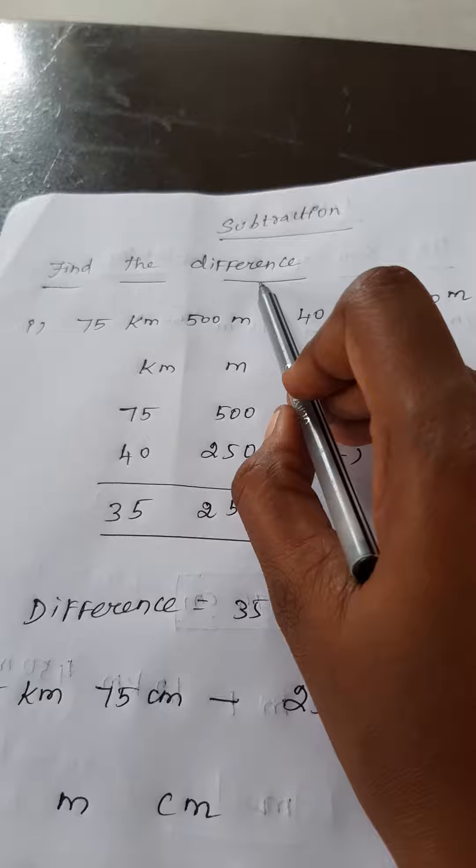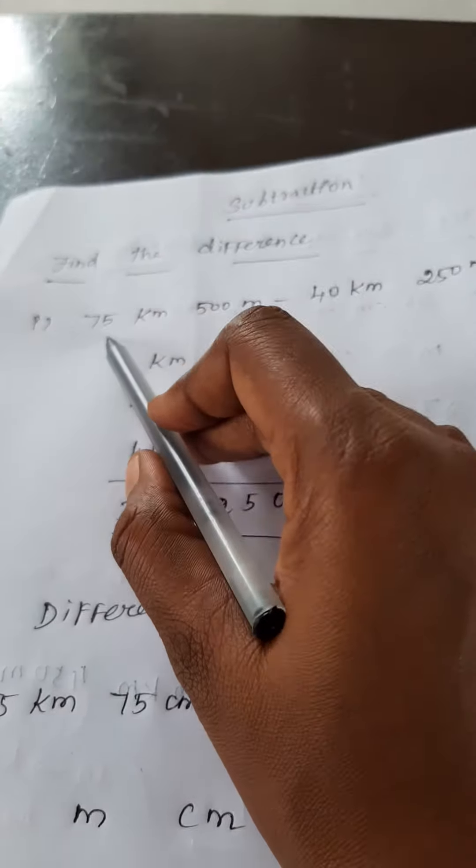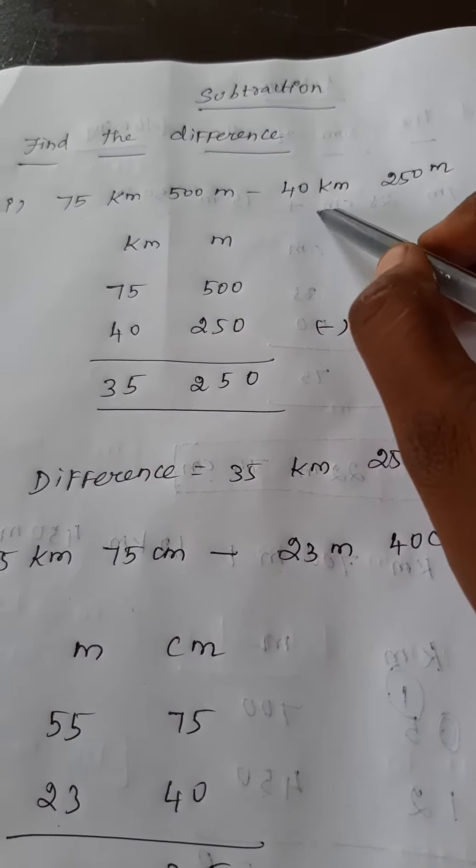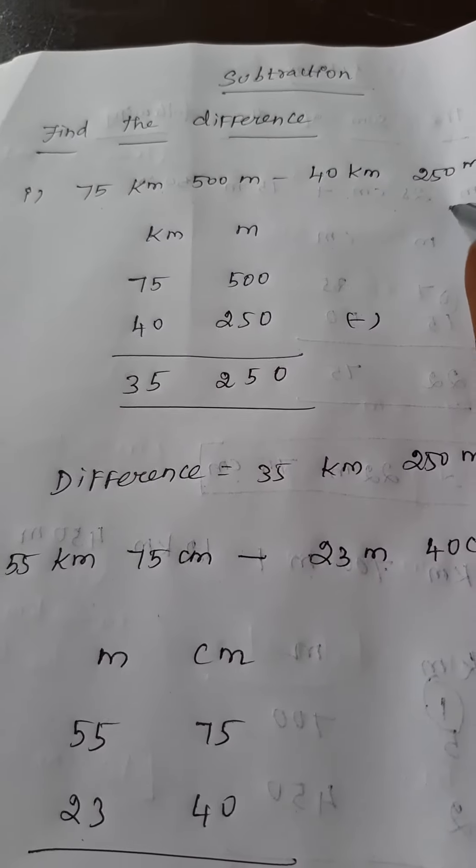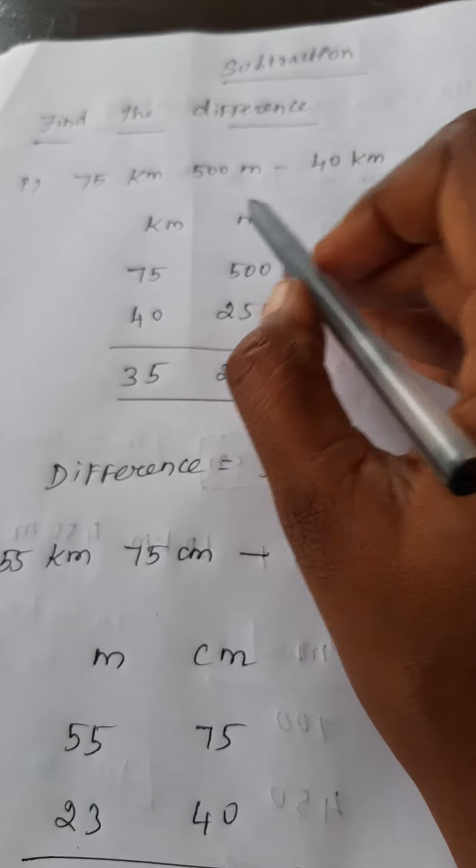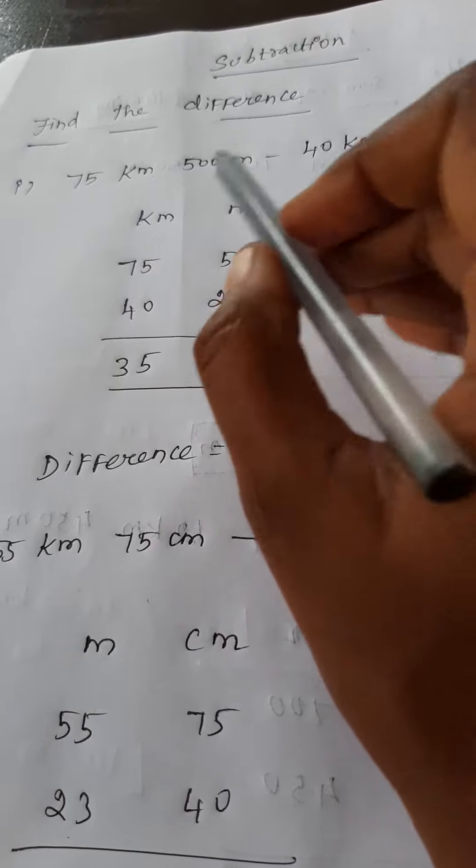Now we subtract from the numbers. Find the difference. Here I given two sums for you. First one, 75 kilometer 500 meter and 40 kilometer 250 meter. Here what are the two place values? One is meter and another one is kilometer.